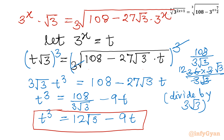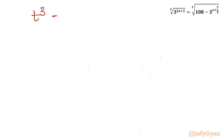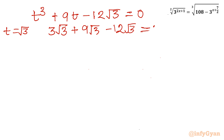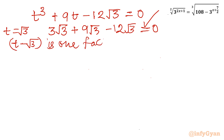We can use the remainder theorem or synthetic division. Testing t equals root 3 as a trial solution: root 3 cubed plus 9 root 3 minus 12 root 3, which gives 3 root 3 plus 9 root 3 minus 12 root 3 equals 0. So yes, it is equal to zero, meaning t minus root 3 is one factor of this cubic equation.